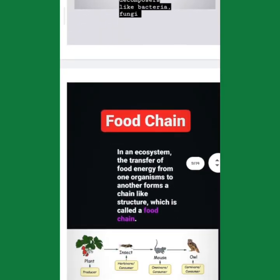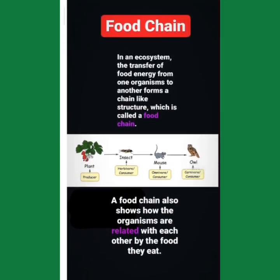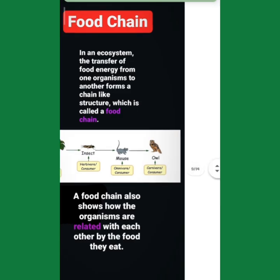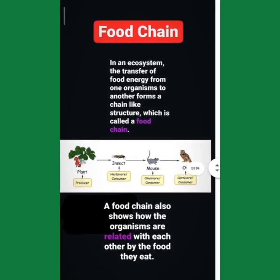Today we will cover the most important topic: the food chain. Every time a question comes — whether it is short, very short, multiple choice, or assertion reasoning — it becomes a question. What is the food chain? In an ecosystem, the transfer of food energy from one organism to another forms a chain-like structure, which is called a food chain.